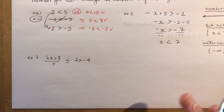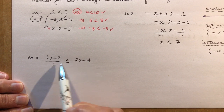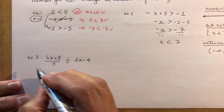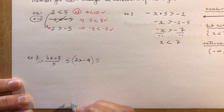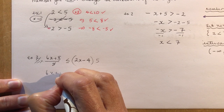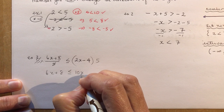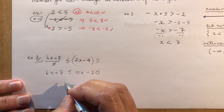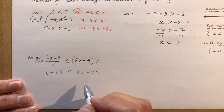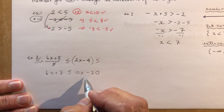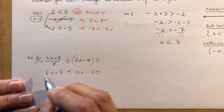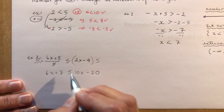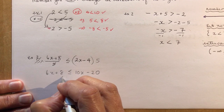Now a more complicated example: (6x + 8) / 5 ≤ something. First, clear the denominator by multiplying both sides by 5. That gives you the expanded form: 10x minus 20. Then bring variables to one side and constants to the other so you can express the inequality clearly. You can approach this two ways — let's look at both to see which is less error-prone.